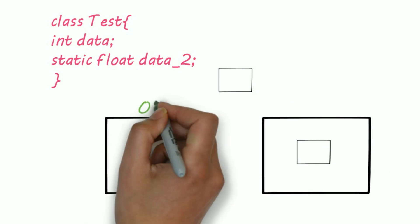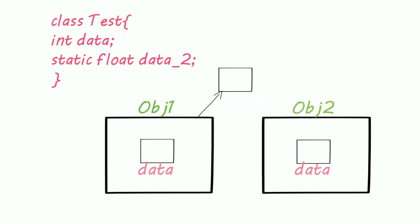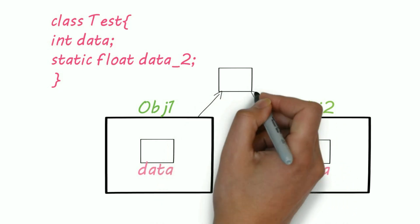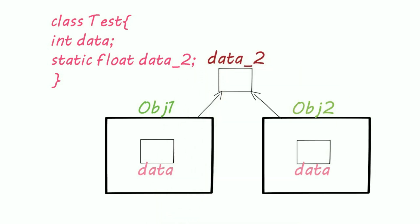Now, if I create two objects of this class obj1 and obj2. Both objects will have data variable in them but only one data_2 variable is created which will be shared by all objects of this class. We will understand this concept better in static keyword video.